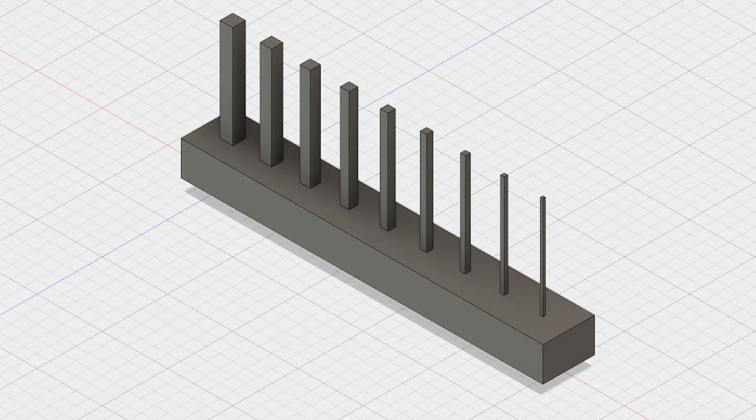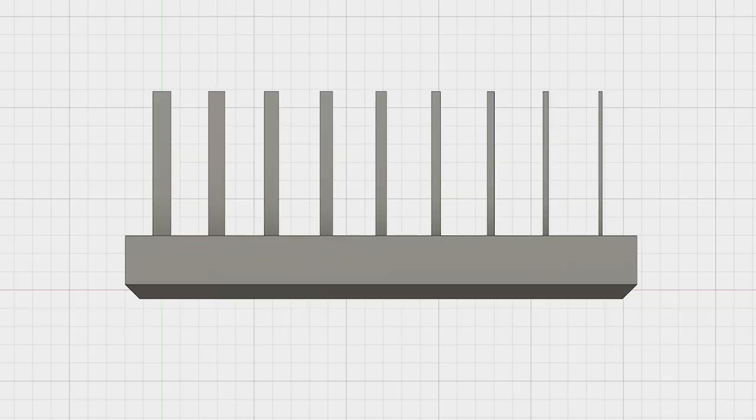Let's say we have a model with small positive features. These square posts range from 500 to 100 microns in width, and they're 4mm tall.